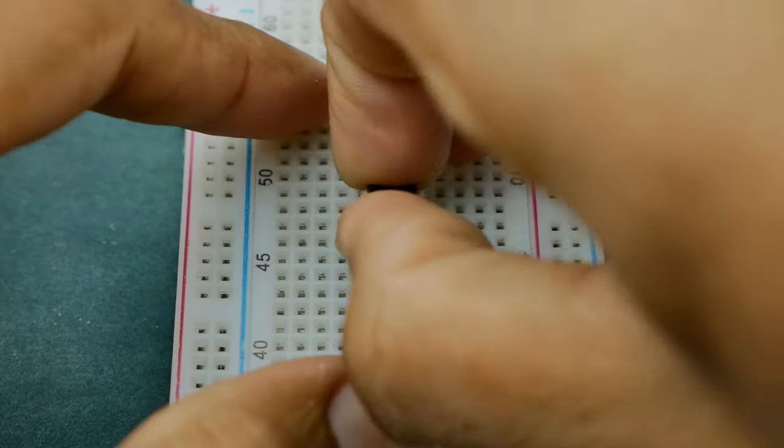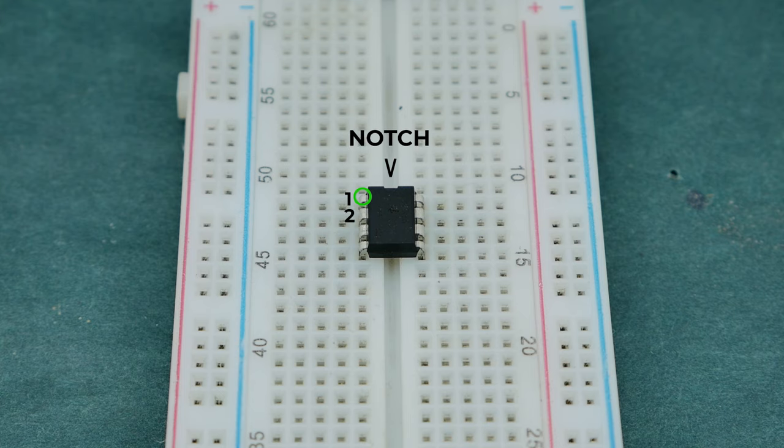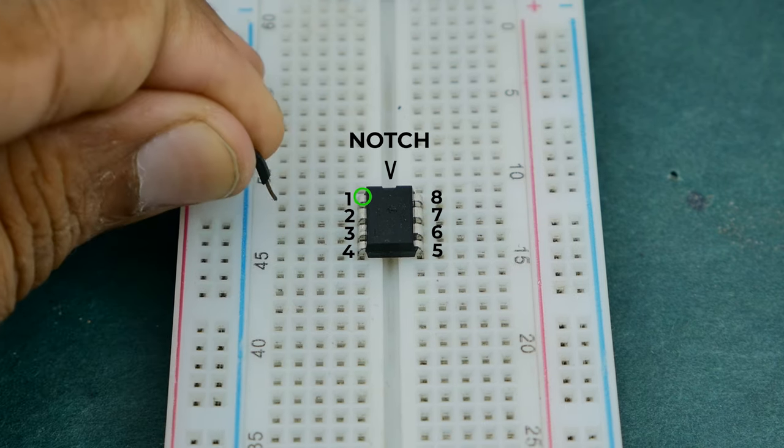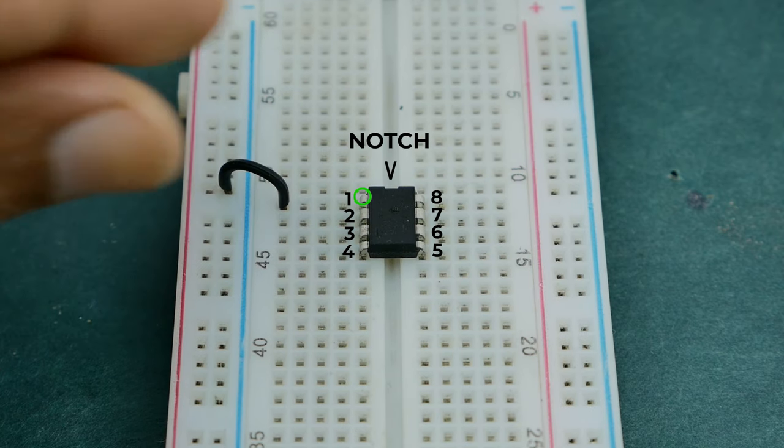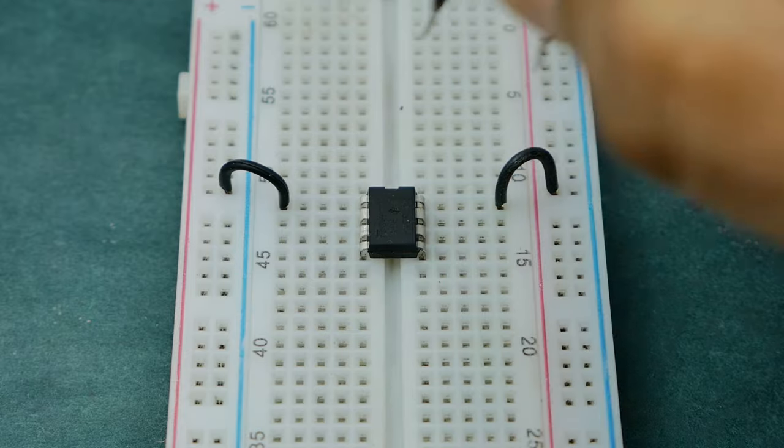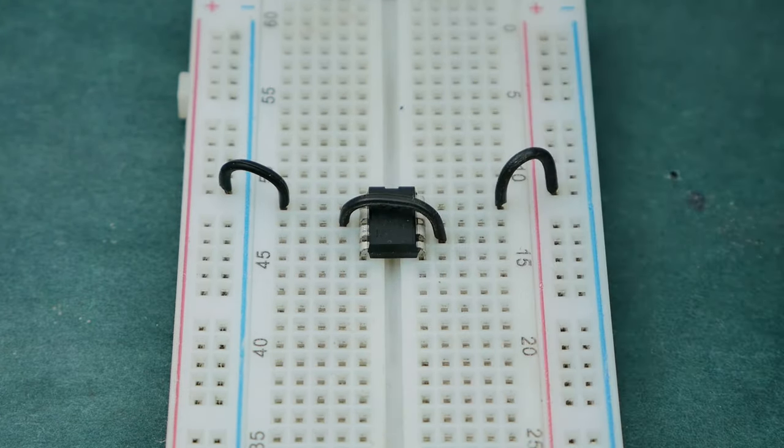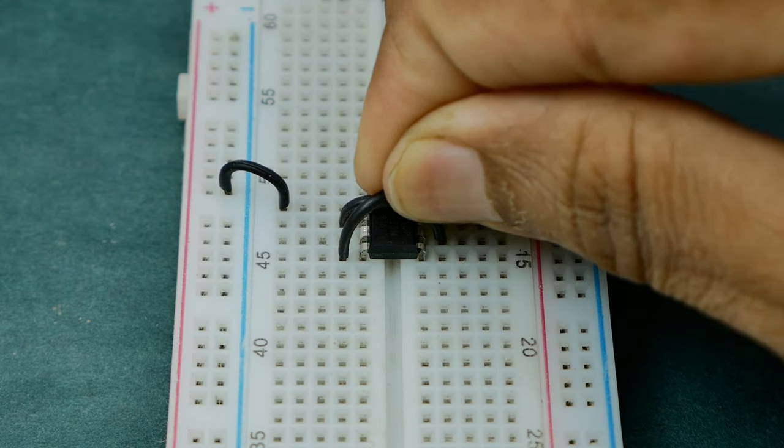Place 555 timer IC on the breadboard with its notch facing up and pin numbering starts from here. This is pin 1, pin 2 and so on until pin 8. Now connect pin 1 to negative rail and pin 8 to positive rail. Next connect pins 6 and 2 to each other and similarly connect pins 4 and 8 of the 555 timer IC to each other.